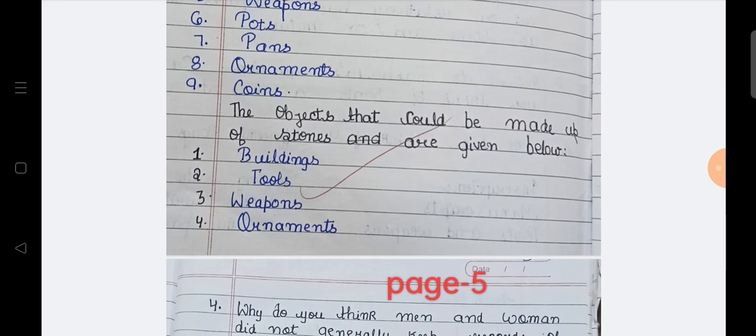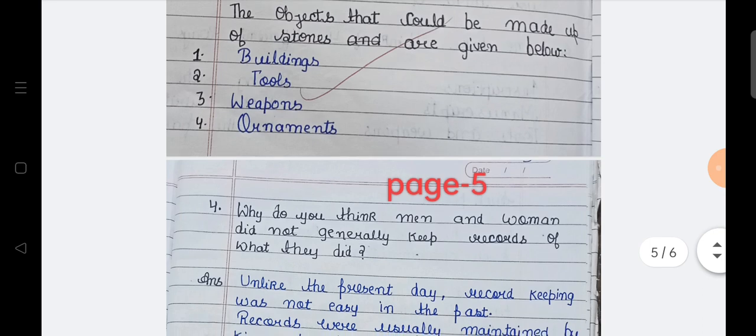The objects that could be made up of stones are given below. So first is buildings, second is tools, third is weapons, fourth is ornaments.